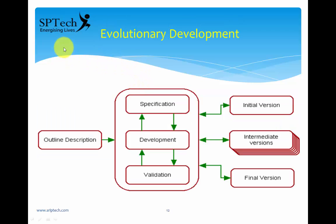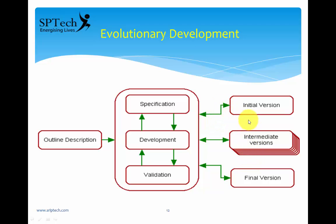The next model is called evolutionary development. In evolutionary development, you can see various versions of the software being produced: an initial version, an intermediate version, and a final version. The striking difference from the waterfall model is that in waterfall you don't see the software until the end, but in evolutionary development you get some component of the software at individual stages. The input is an outline description where the customer gives you requirements, then through specification, development, and validation, different versions of the software emerge. The software evolves over a given period of time — that is why it is called evolutionary development.